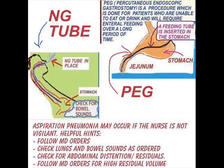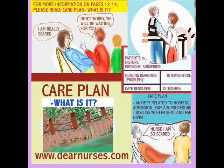Here are some concerns when you have a patient on tube feeding, regardless of whether it's nasogastric or from a PEG. Aspiration pneumonia should be a real concern. You should follow your MD orders very carefully, check the lung sounds and bowel sounds, and check for abdominal distention, which is another sign that the fluid is not going the way it should. Sometimes patients may have difficulty absorbing tube feedings. The doctor will typically tell you to check for residuals, and if the residuals are very high, you follow the doctor's instructions for what you should do.